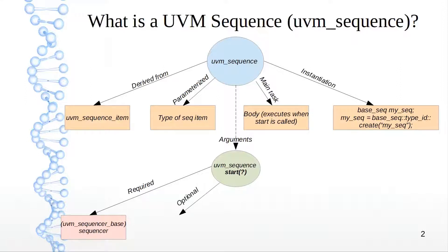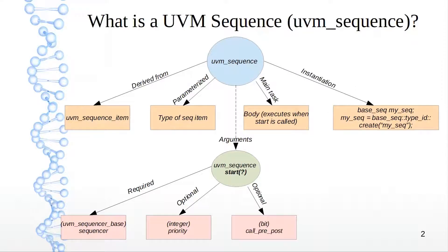The first optional argument is the priority. It's of type integer, and if it's not given, then it's assumed that the priority is the same as the parent and is ignored. Then another optional argument is call_pre_post, which is of type bit. These are like hooks or callback tasks — as the name suggests, you call the pre-body or post-body task, which get executed before or after the body task respectively.